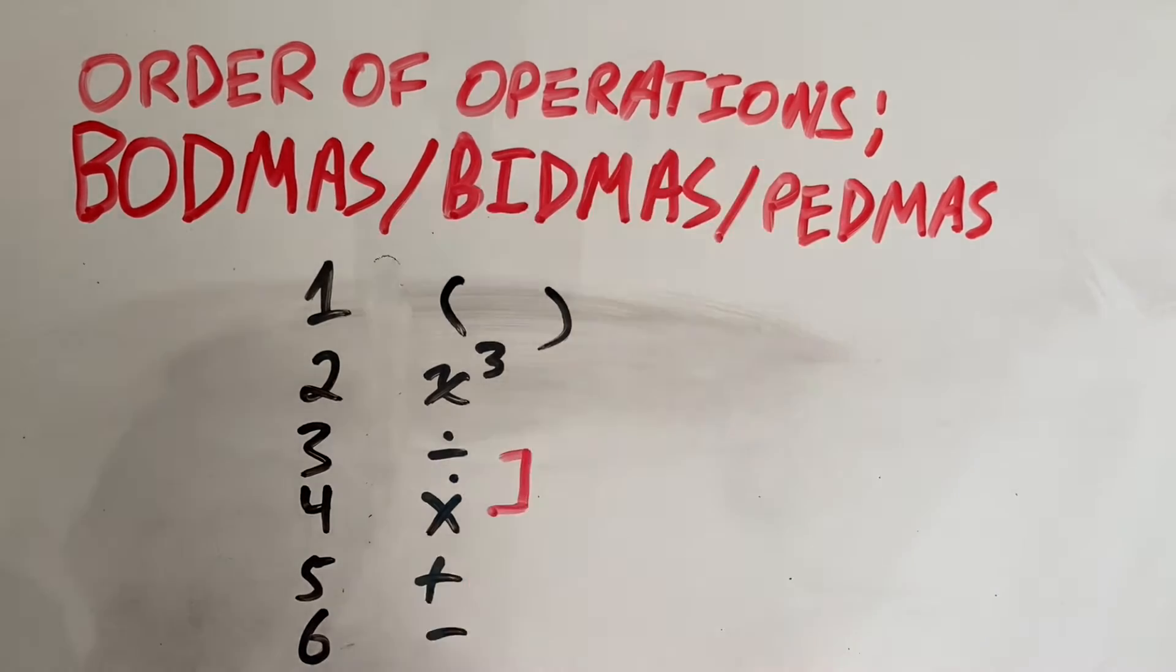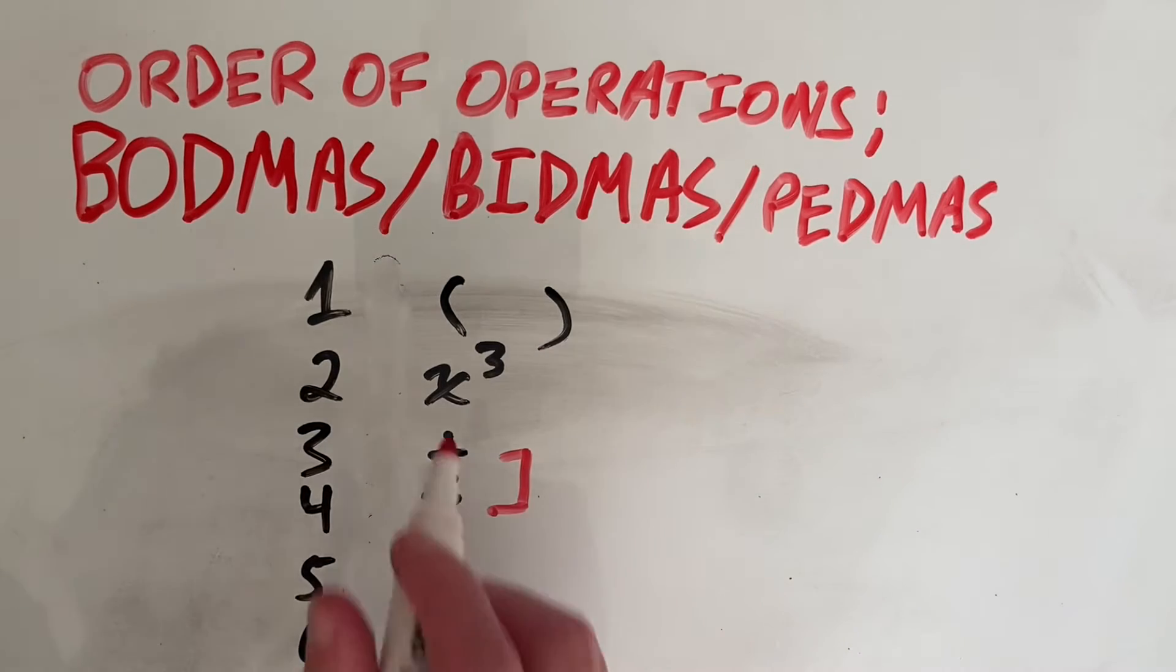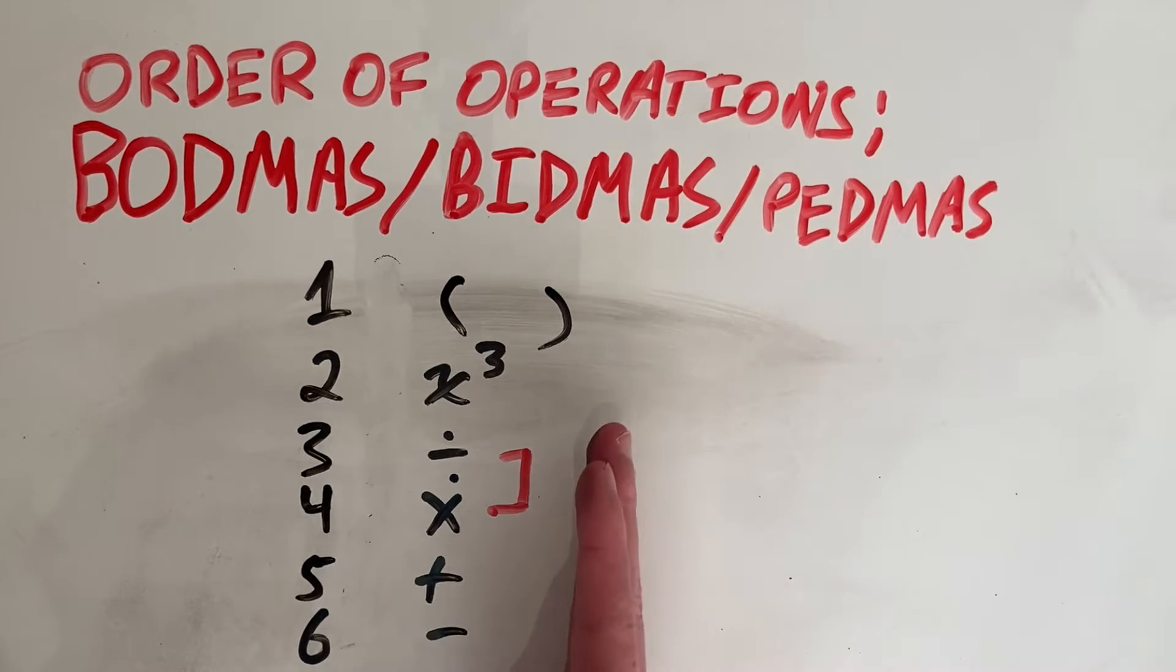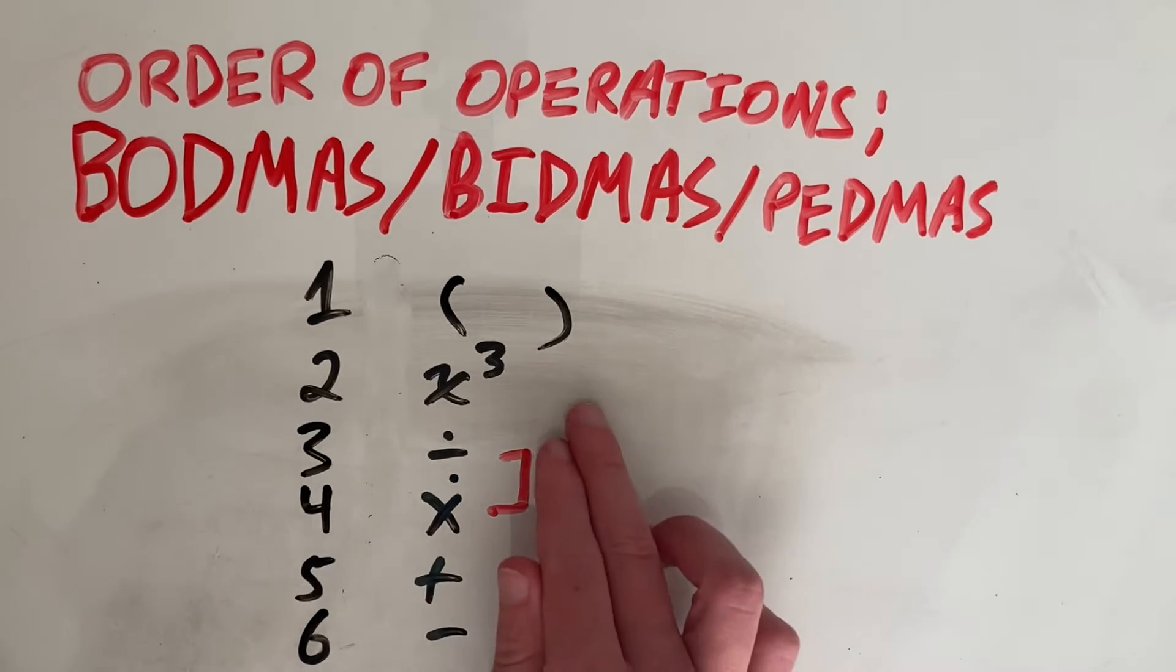a very important thing to note is that while brackets are always first and exponents is always second, your third and fourth steps are interchangeable. So multiply and divide are essentially both third. In order to determine which one comes first, we will do whichever one is furthest left first.